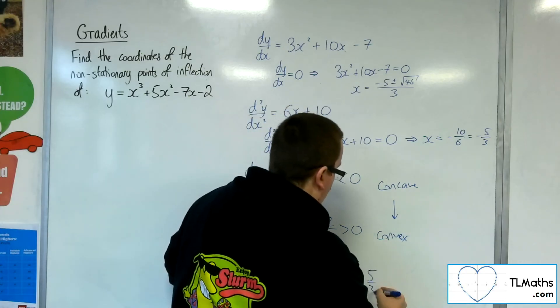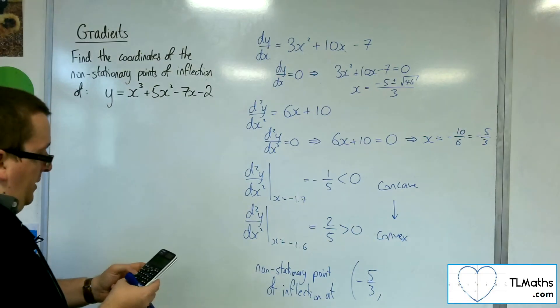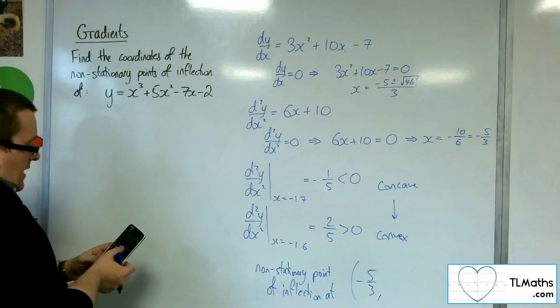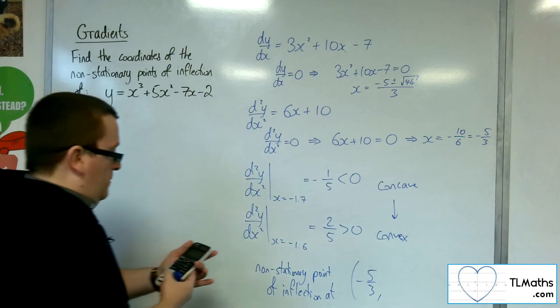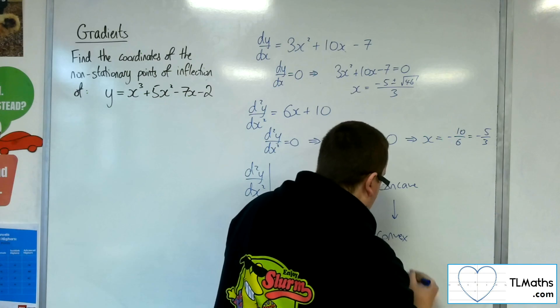We've got the x-coordinate, and now I just need to find the y-coordinate. Substituting minus 5 thirds into this, we get minus 5 thirds cubed, plus 5 lots of minus 5 thirds squared, take away 7 lots of minus 5 thirds, take away 2.